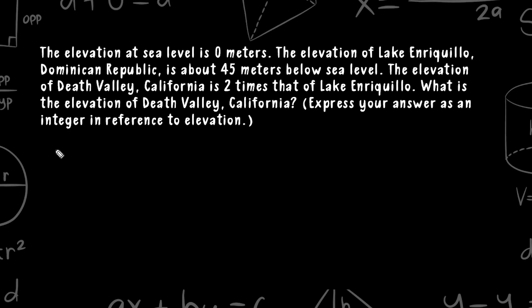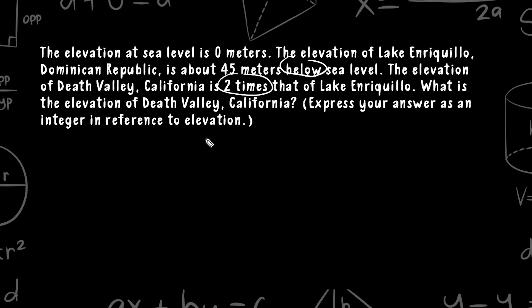This first problem reads that the elevation at sea level is zero meters. The elevation of Lake Enriquejo, Dominican Republic, is about 45 meters below sea level. The elevation of Death Valley, California, is two times that of Lake Enriquejo. What is the elevation of Death Valley, California? Express your answer as an integer in reference to elevation.